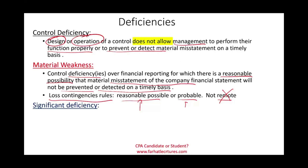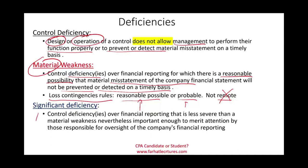We could also have a control deficiency considered a significant deficiency. These are control deficiencies over financial reporting that are less severe than material weakness — they are significant but not material. Although they are not material, they are important enough that management and those responsible for oversight of financial reporting need to be aware of them. A deficiency can constitute a material weakness, a significant deficiency, or simply remain a control deficiency.